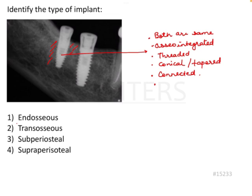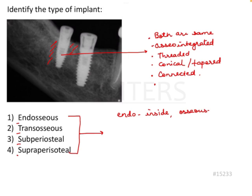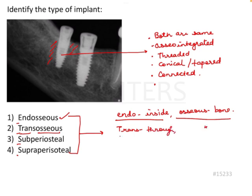Let's look at the options: the first is endosseous implant, second is transosseous implant, third is subperiosteal implant, and fourth is supraperiosteal implant. Breaking down the terminology — 'endo' means inside and 'osseus' means bone. So are these implants present inside the bone? Yes, so the answer could possibly be endosseous implant.